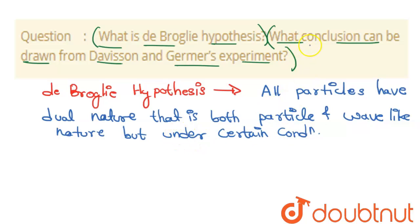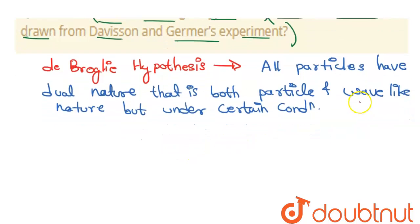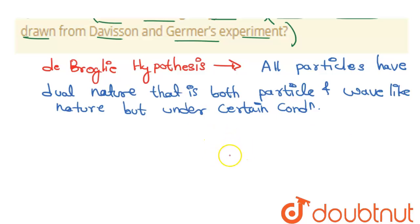From the Davisson and Germer experiment, they found that electrons exhibit wave nature — electrons behave like waves. They also determined mathematically that the wavelength obtained experimentally was actually equal to de Broglie's wavelength, that is, h over the mass of the electron multiplied by the velocity of that electron.